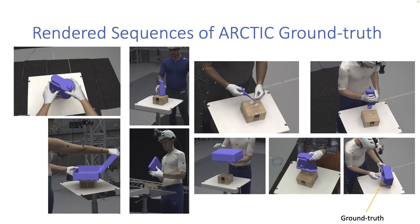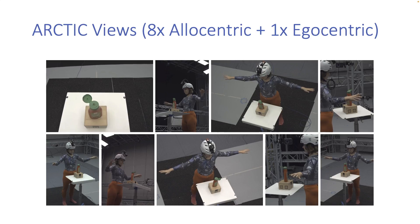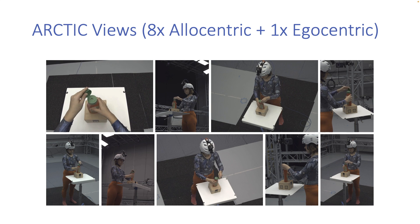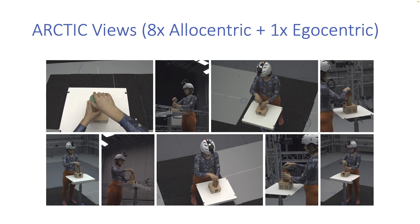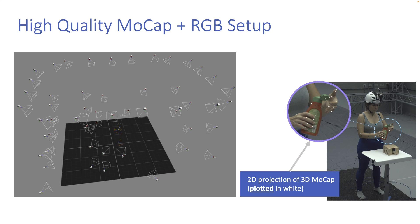Here we show rendered ground truth overlaid on videos. Images in Arctic are taken from eight allocentric static views and one egocentric moving view. Arctic is highly accurate. The videos are captured synchronously with a high-quality mocap system comprised of 54 motion capture cameras to minimize the effect of occlusions.